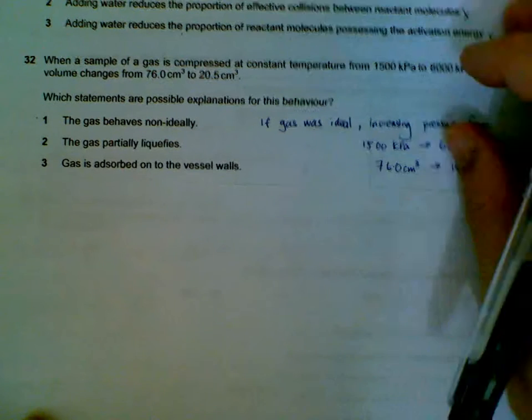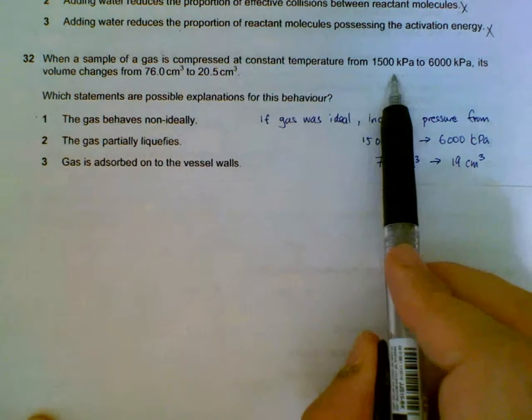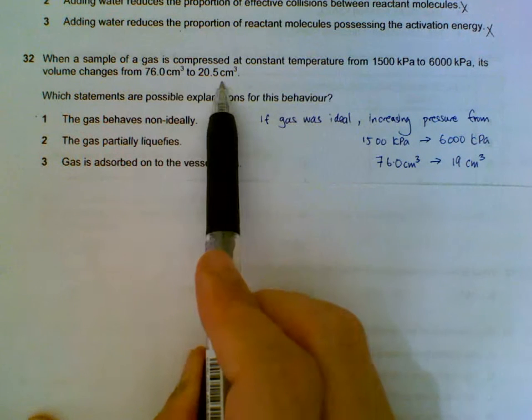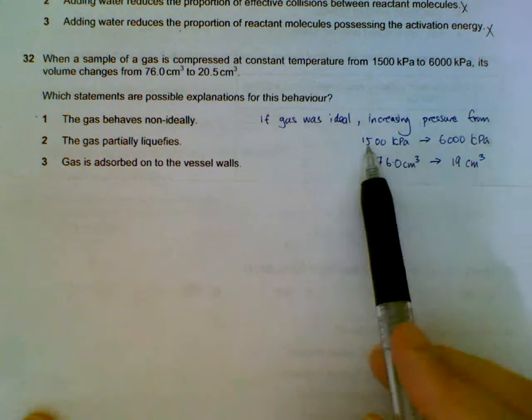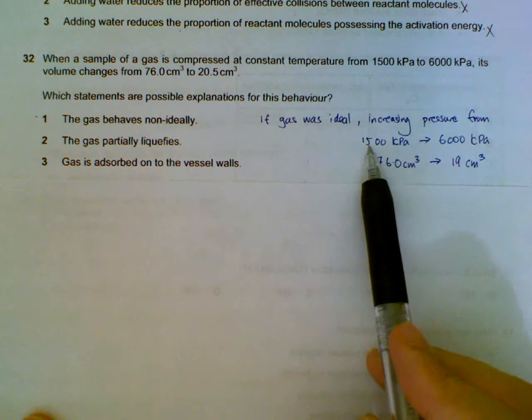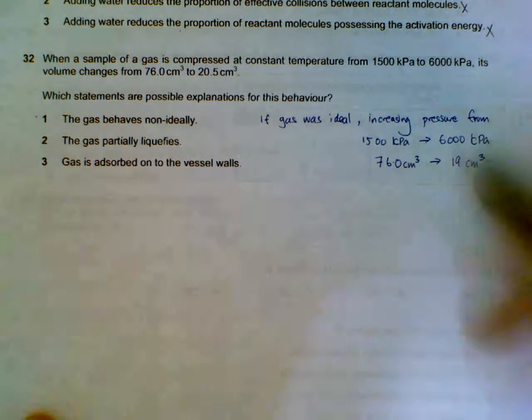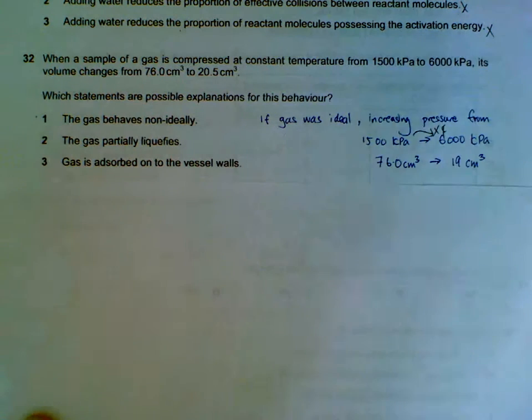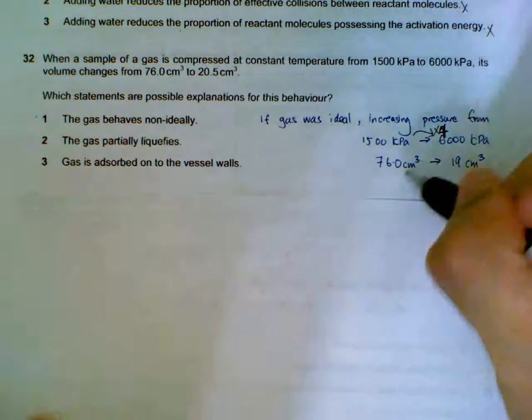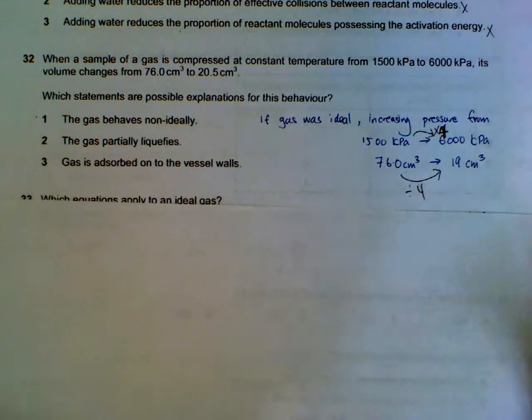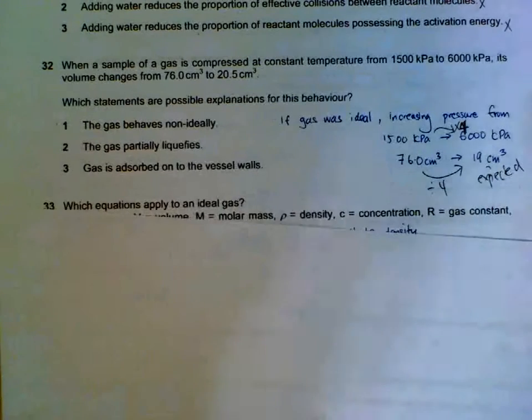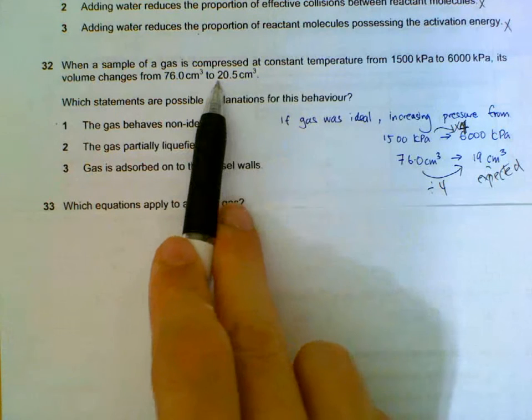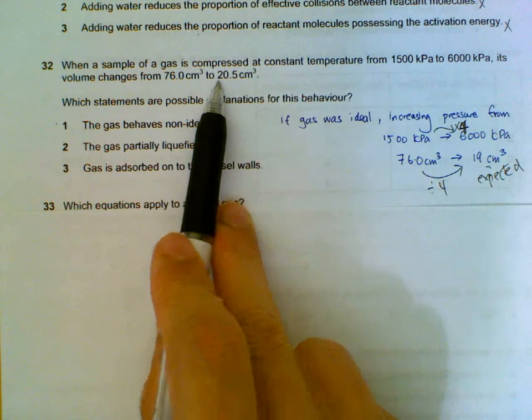32. When we compress a gas by increasing the pressure, we see that its volume changes from 76 to 20.5. So if the gas was ideal, increasing the pressure from 1500.5 kilopascal to 6000 kilopascal, we are increasing it by 4 times. Multiplied by 4. When pressure is increased by 4 times, if it was ideal, we expect the volume to decrease by 4. So this is the expected volume, expected volume. However, the volume decreases to 20.5. So why does it not decrease as much as we expect?